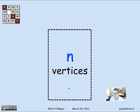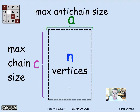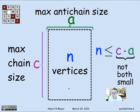This is a general phenomenon. If you have a DAG with n vertices, a maximum chain size of c, and a maximum anti-chain size of a, then the total number of vertices is at most c times a. You can't finish in c steps using at most a processors if n exceeds c times a. So you can't have both the anti-chain size and chain size be too small, because their product must be at least n.